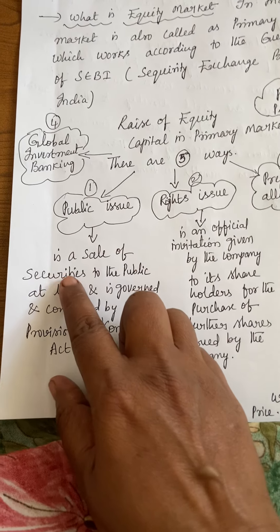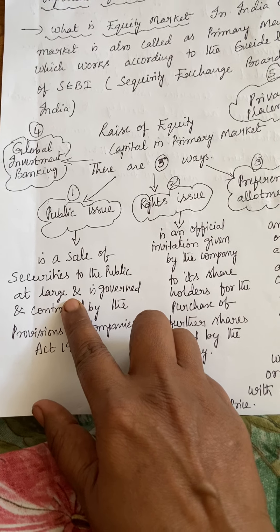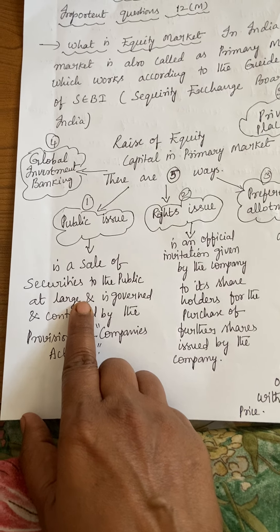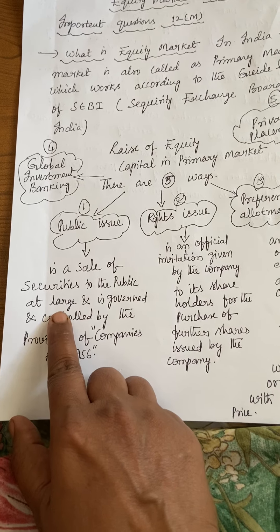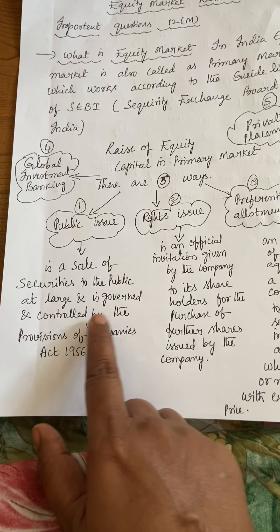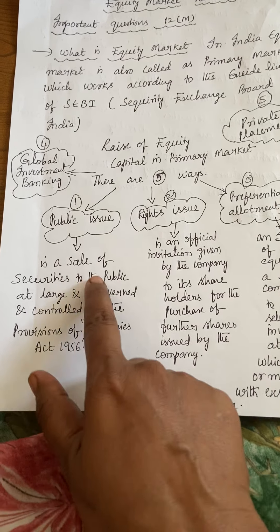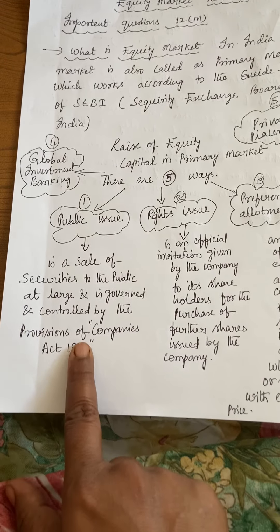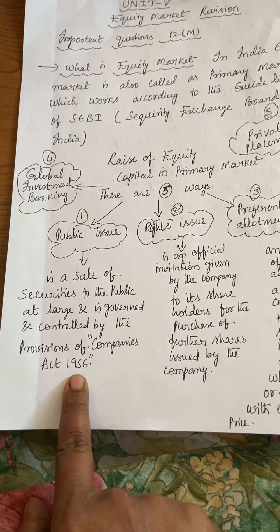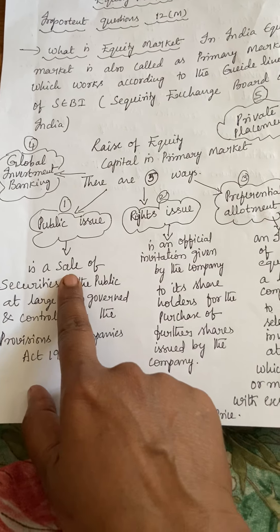What is public issue? Public issue means the sale of securities to the public at large in the open market. The company releases information regarding shares through a notification or advertisement in the open market. It is governed and controlled by the provisions of the Companies Act 1956 in India. When these shares are issued in the open market, anyone can buy them. This is called a public issue.